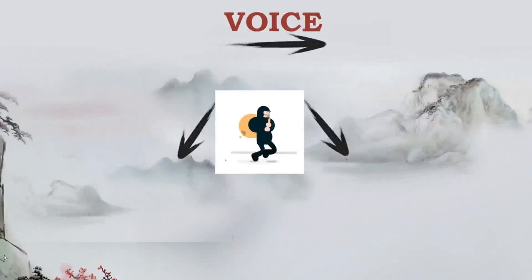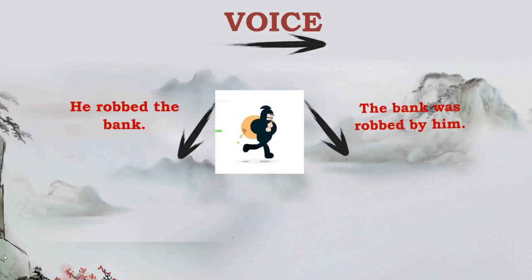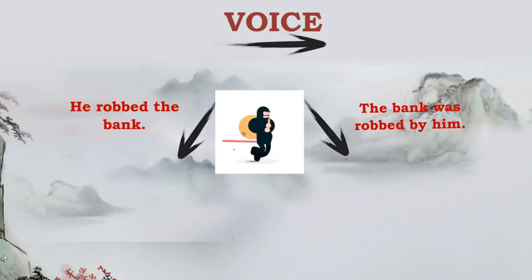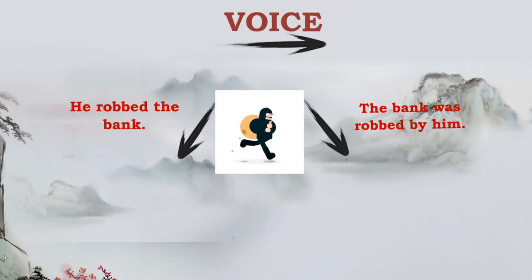What is voice? Let us look at this picture and the two sentences that are framed with reference to the picture. The first sentence: he robbed the bank. The second one: the bank was robbed by him. Both the sentences mean the same thing, but both are also having the same time reference — the structure, however, has changed. This relates to the verb 'robbed' and whether the subject is actively doing the action or the action is performed on it or by it. That is exactly voice.